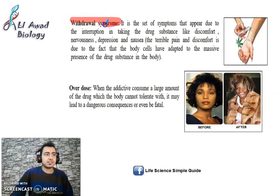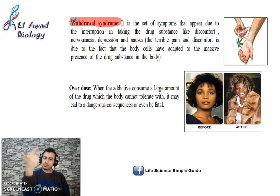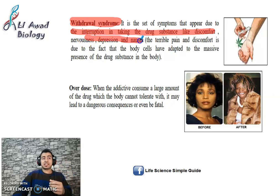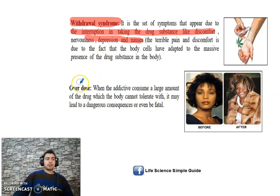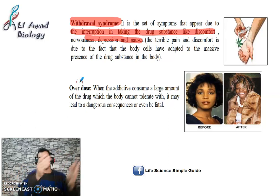Third characteristic: withdrawal syndrome (عوارض الانسحاب). Any substance that, when you stop taking it, causes psychological and physical symptoms — that is a drug. It is the set of symptoms that appear due to interruption in drug use, like discomfort, psychological distress, nervousness, depression, nausea. This results from your body cells having adapted to the drug. When you leave it, it creates problems. This is called a drug. Many medicines also cause withdrawal syndrome — most commonly nerve/psychiatric medications. If you stop them, they cause symptoms.